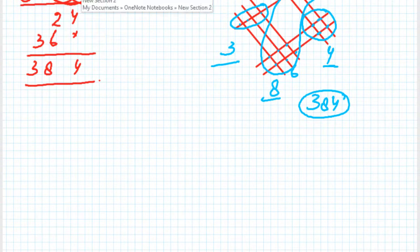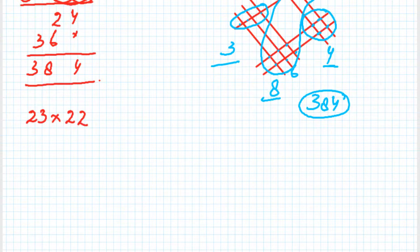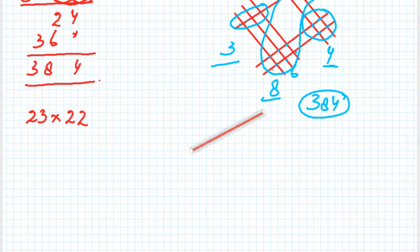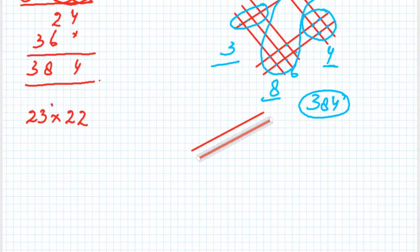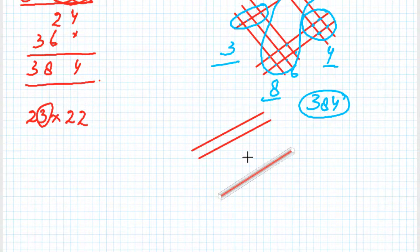For the next example we shall take 23 multiplied with 22. For the number 23, draw two lines for the first digit — one line and then a second line. Then for the second digit 3, draw three lines at some distance in the same direction — one line, then the next line.